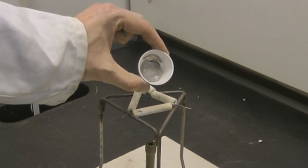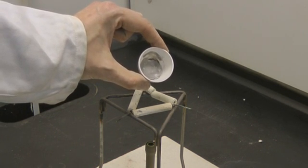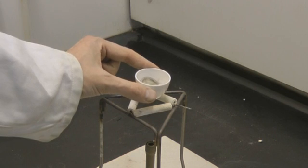After the crucible is cooled, we can remove the lead bromide and we can see the lead clearly visible in the bottom of the crucible.